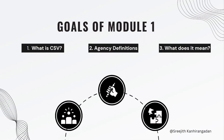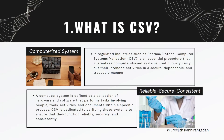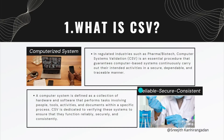Here are three goals of our session. Number one, we are going to look at what is computer system validation? Number two, we are going to look at different agency definitions, and I'm going to explain what that definition means so that you clearly understand what is really computer system validation. Let's get started with goal number one: what is computer system validation?